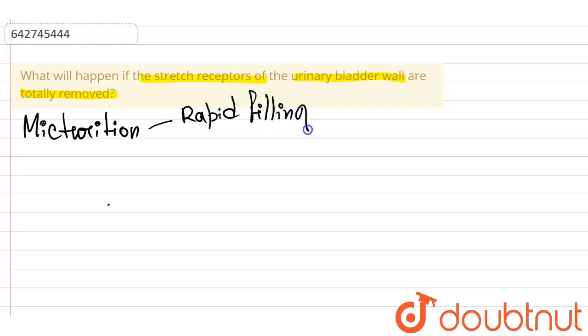And after this, in the second step, the nervous reflex called the micturition reflex empties the bladder, or if this fails, at least causes a conscious desire to urinate. So the second step is micturition reflex.